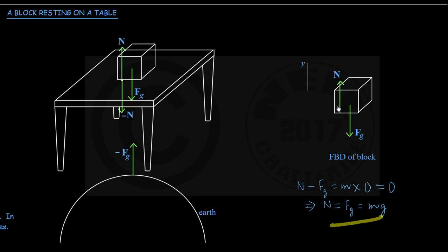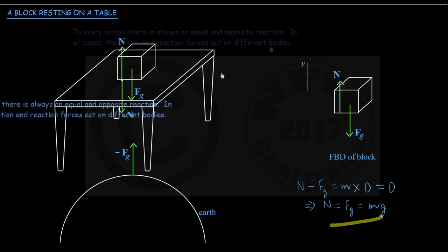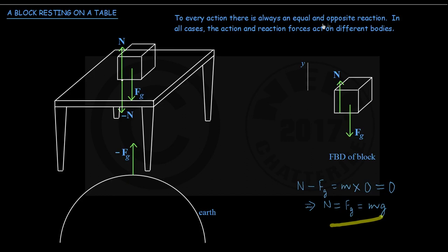This result — that the normal force and force of gravity are equal in magnitude and opposite in direction — might sound like the third law, tempting us to call them an action-reaction pair. Wrong. Read the third law statement again: the action and reaction forces always act on different bodies. Since the normal force N and the force of gravity Fg are both acting on the same body — the block — they can never be an action-reaction pair. We got N and Fg equal and opposite by using the second law, F equals Ma, and not from the third law.